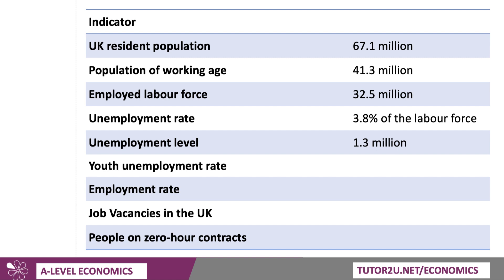Youth unemployment is higher at 11.3% in the UK for 16 to 24-year-olds — roughly three times higher than the UK adult rate. But that's fallen over the last decade or so. And of course it's much lower than countries like Spain, where it's 32%, and South Africa, where it's 66% — two-thirds of young people in South Africa are out of work.